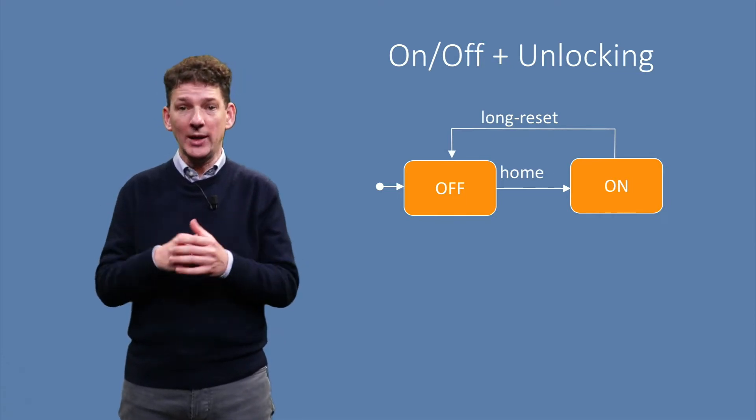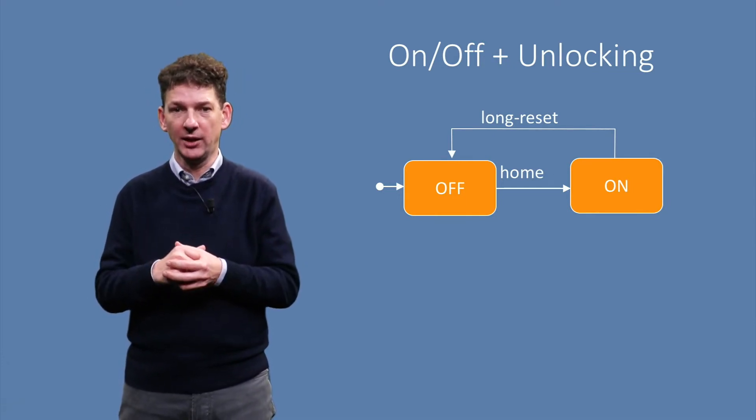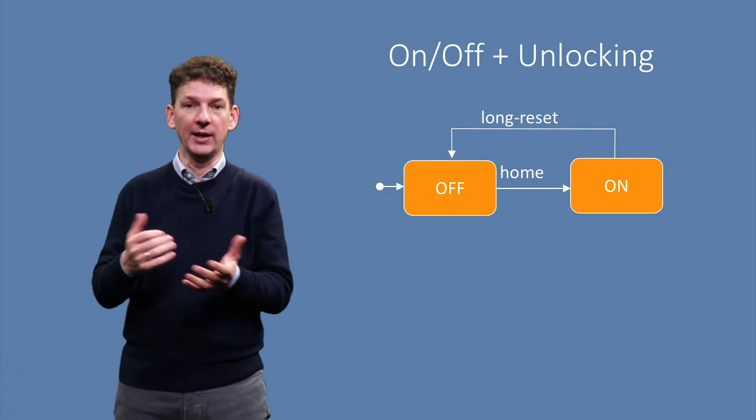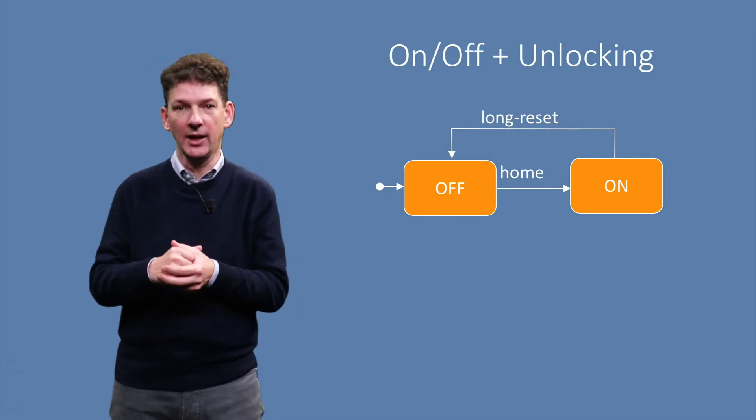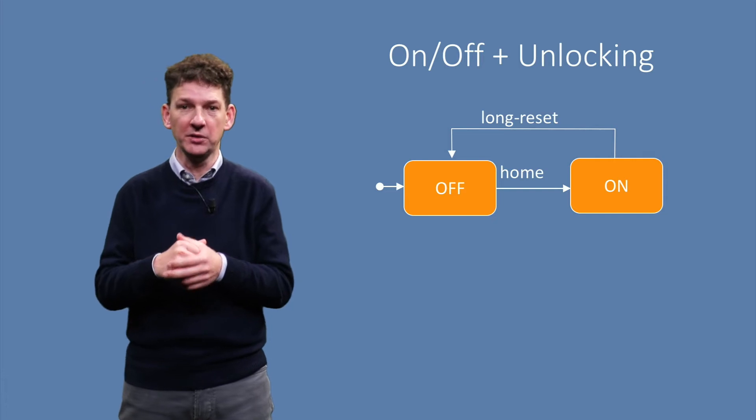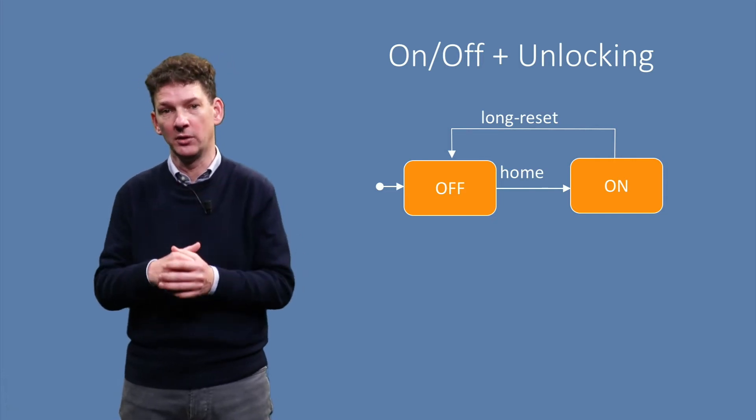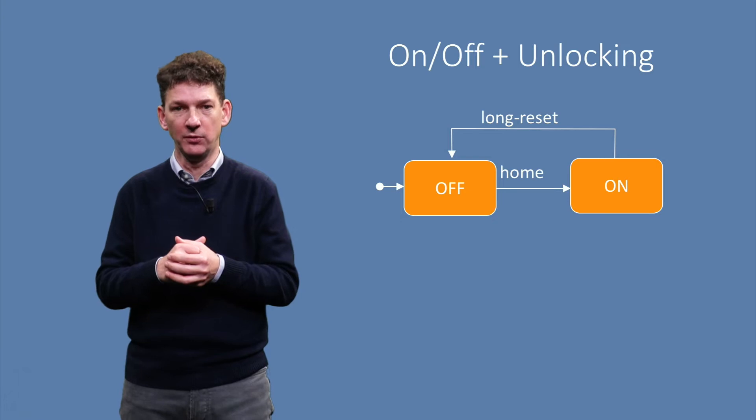We can also collapse the super-state and just draw it as a simple state called ON. We then have a simple diagram indicated which buttons to use to switch the phone ON or to switch it OFF, another diagram we encountered before.